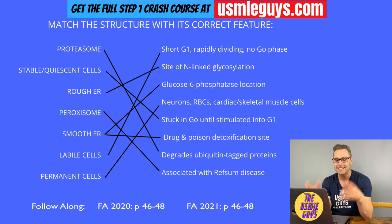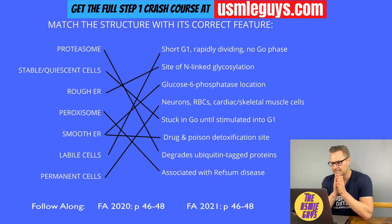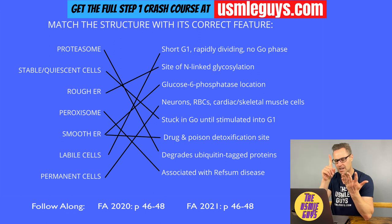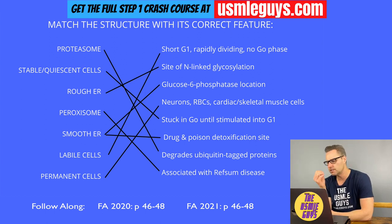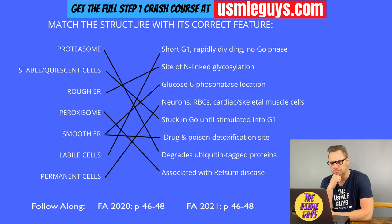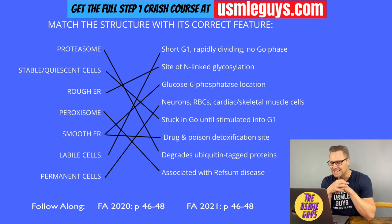If the Golgi can't add that mannose-6-phosphate tag to proteins, the lysosomes become deficient in digestive enzymes and accumulate cellular debris — we call this I-cell disease. This is the result of a defect in N-acetylglucosaminyl-1-phosphotransferase, characterized by coarse facial features, corneal clouding, joint mobility restrictions, gingival hyperplasia, claw-hand deformities, increased plasma levels of lysosomal enzymes, and kyphoscoliosis. The signal recognition particle (SRP) is needed to move polypeptide-ribosome complexes from the cytosol to the RER; if absent, proteins accumulate in the cytosol.